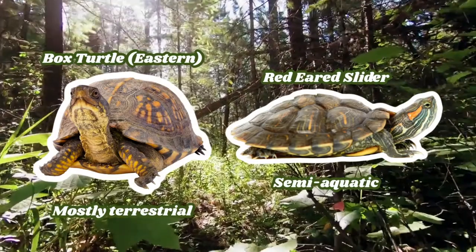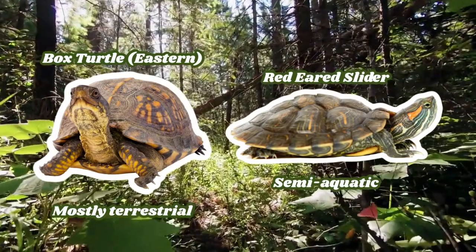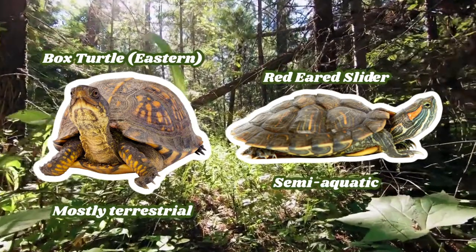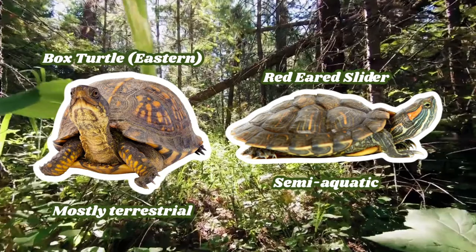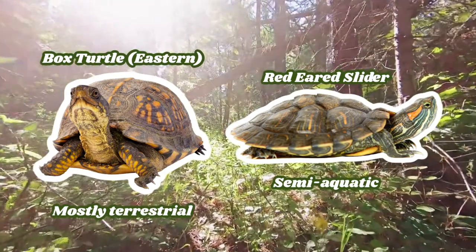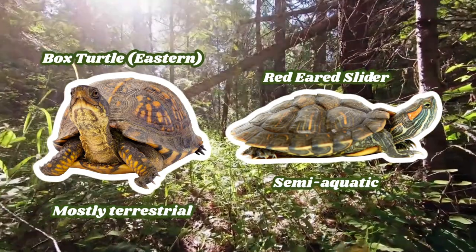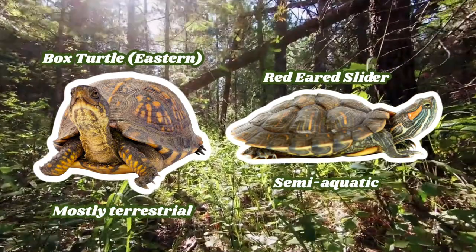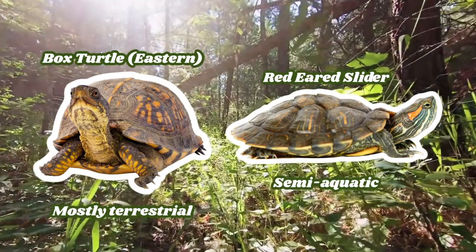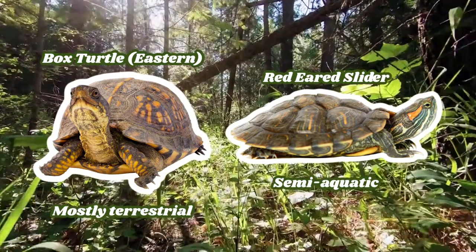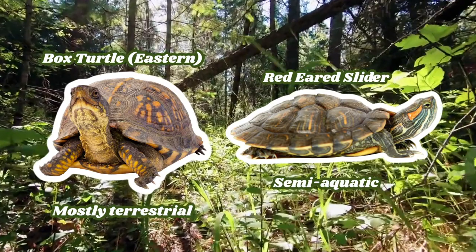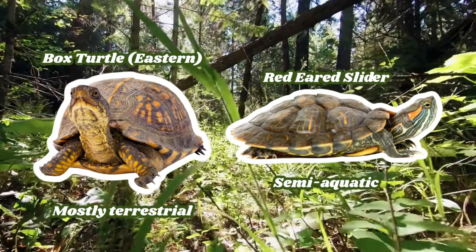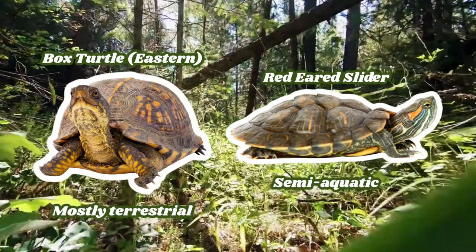Here we have two different types of turtles, and I wanted to go over their body types and explain why they're not tortoises. Here we have a box turtle — you can see it has a rounded shell, but it is only mostly terrestrial, meaning it can swim, which excludes it from being a tortoise. Box turtles are also omnivorous. For our red-eared slider, you can see it has a flatter shell suited for swimming, with webbed long toes and long claws to aid in swimming.